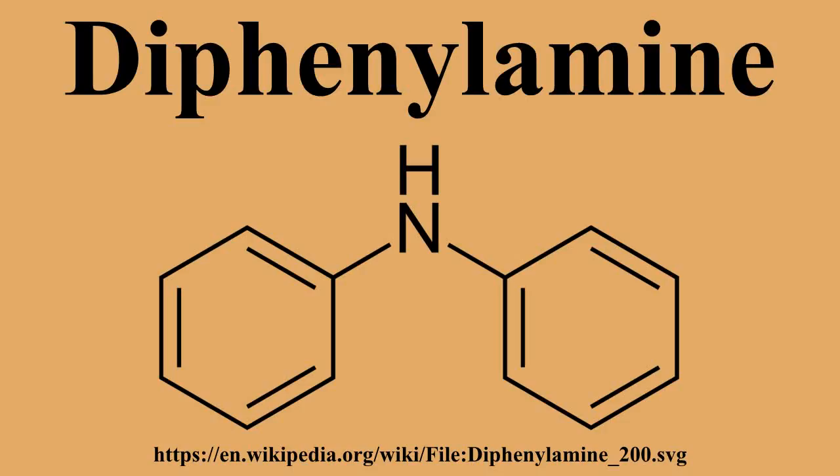In animal experiments, diphenylamine was rapidly and completely absorbed after ingestion by mouth. It underwent metabolism to sulfonyl and glucuronyl conjugates and was rapidly excreted mainly via urine. Acute oral and dermal toxicity were low. Diphenylamine can cause severe irritation to the eyes. It was not a skin irritant, and it has not been technically feasible to test acute toxicity by inhalation.